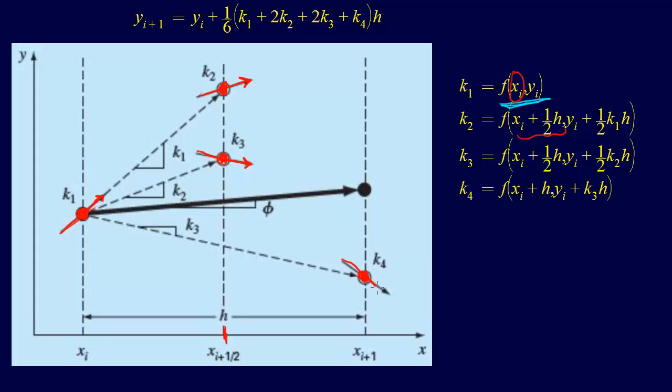Once we have our k1, our k2, our k3, and our k4, we put them all together and we come up with our phi that we use to take this slope phi. The phi that we use to take the entire step, and that becomes our step.